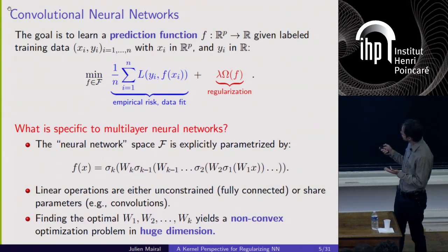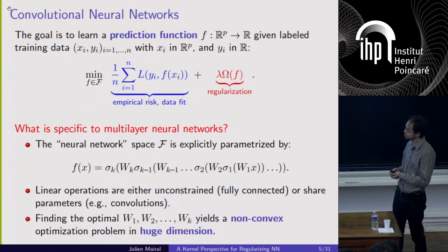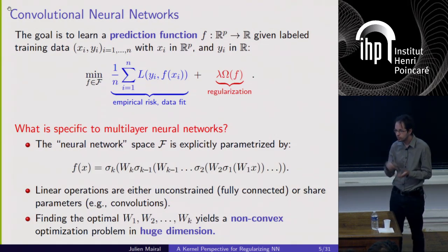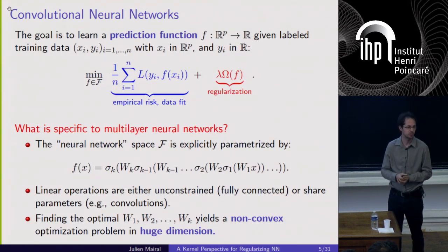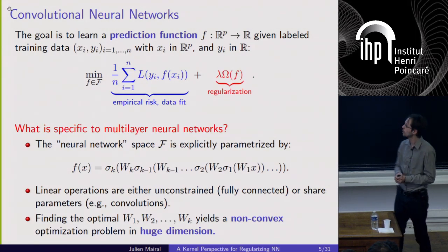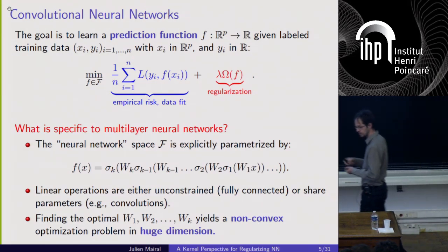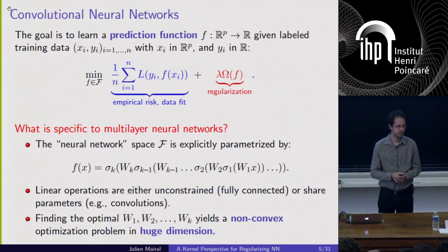Even if you do a convolutional neural network with convolutions, finding the optimal parameters is still a problem in huge dimension. Typically people are learning deep networks with millions of parameters today, even a few works going to billions of parameters. The problem is non-convex, but basic techniques to optimize in a huge dimension that give an approximate solution tend to work very well.